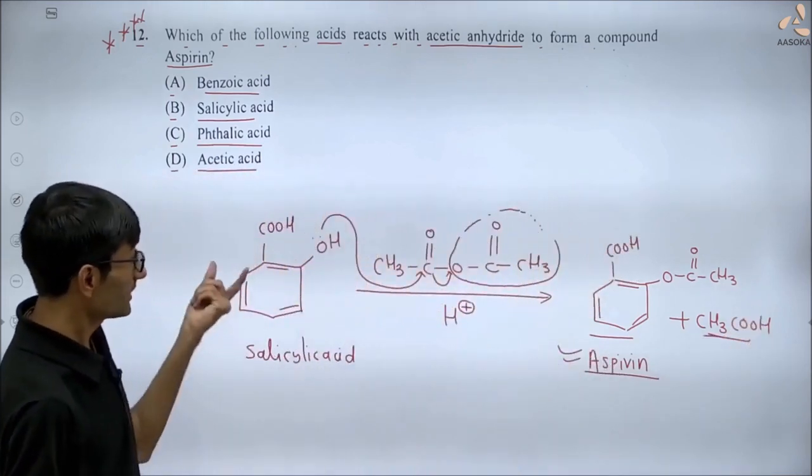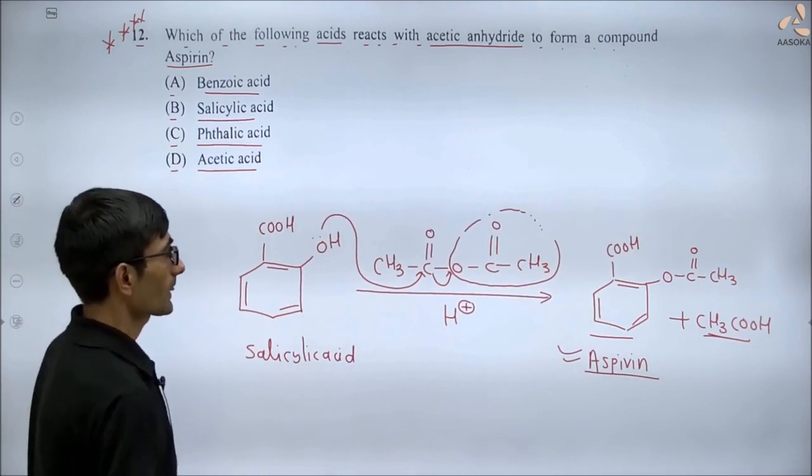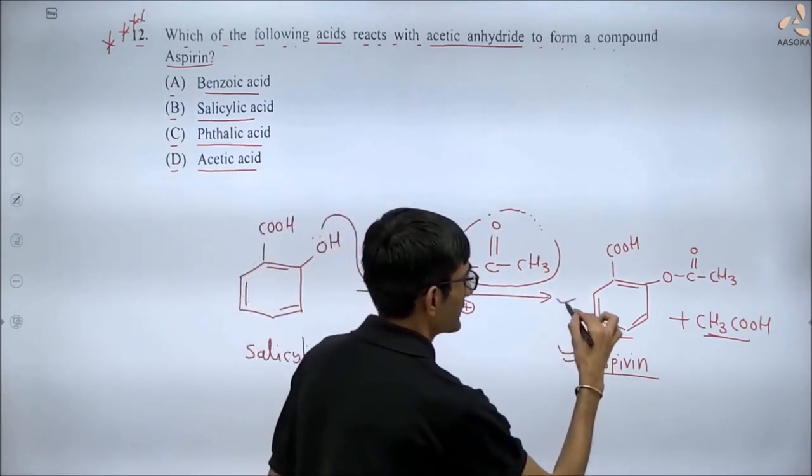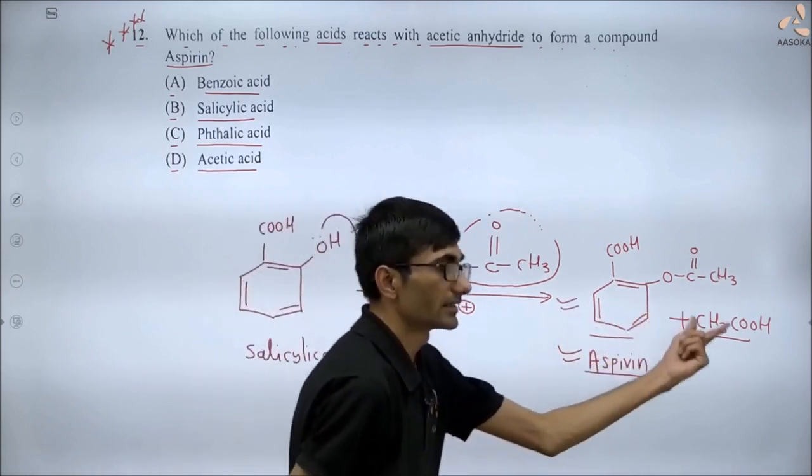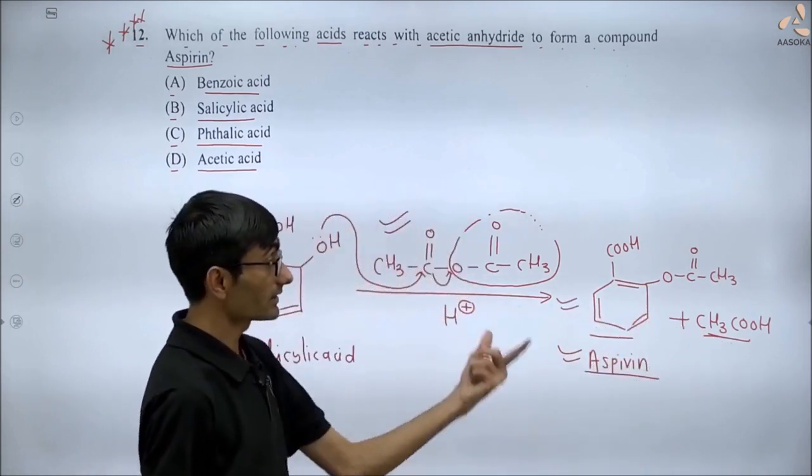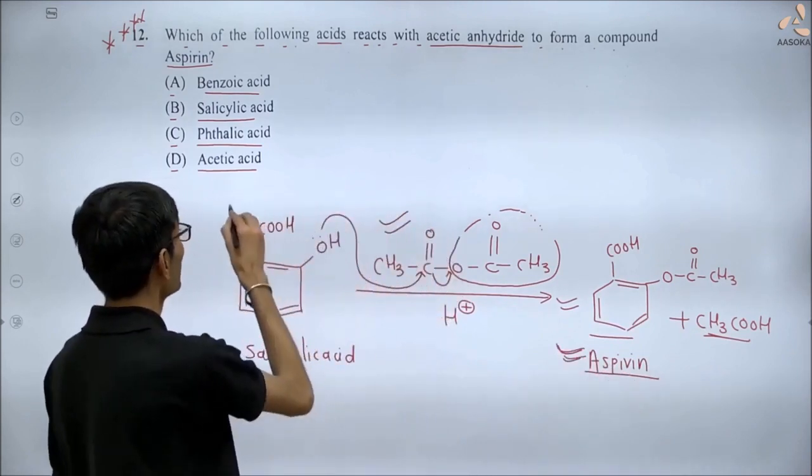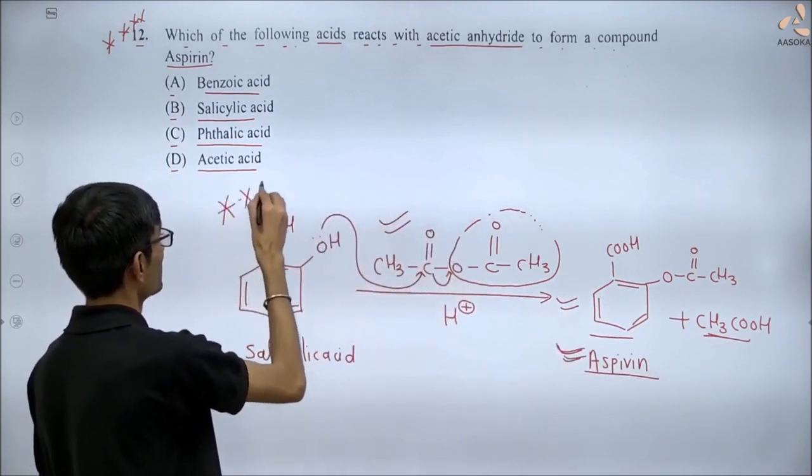When salicylic acid reacts with acetic anhydride, acetyl salicylic acid is formed, along with acetic acid. Acetyl salicylic acid is called aspirin. This is a famous question. It can be asked again, so remember this.